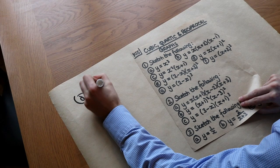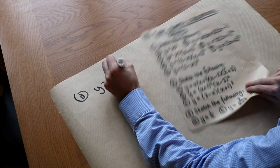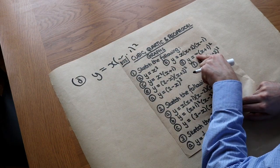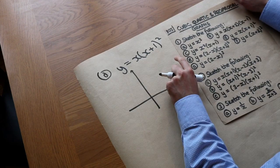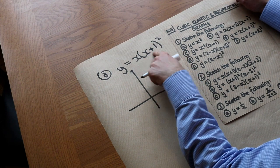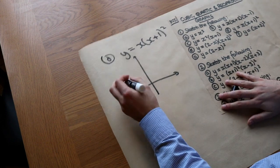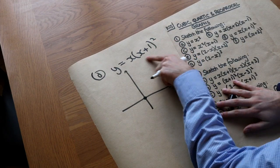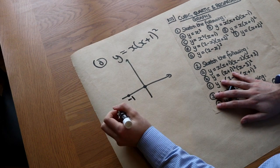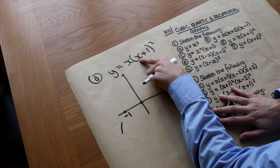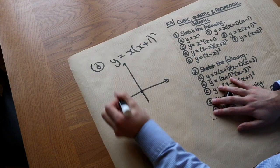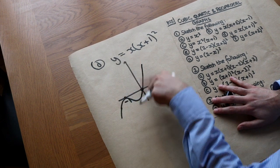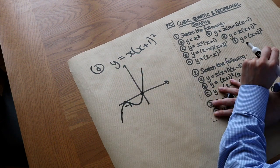What about y equals x(x+1)²? It's a positive cubic because expanding gives one x cubed. There's a root at zero and a repeated root at minus 1 because of the squared factor. As the curve comes up, it touches minus 1 because that's a repeated factor, then comes down, and crosses zero because that's not a repeated factor.